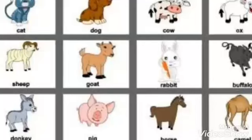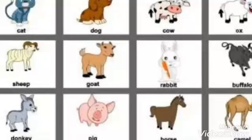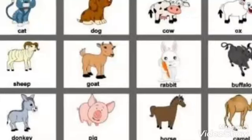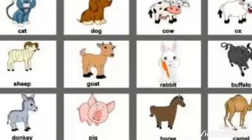So firstly, I'm going to tell you what pet animals are. A pet animal is an animal kept primarily for a person's company or entertainment, rather than as a working animal, livestock, or laboratory animal. Pet animals are just like our family members and we keep them in our houses.